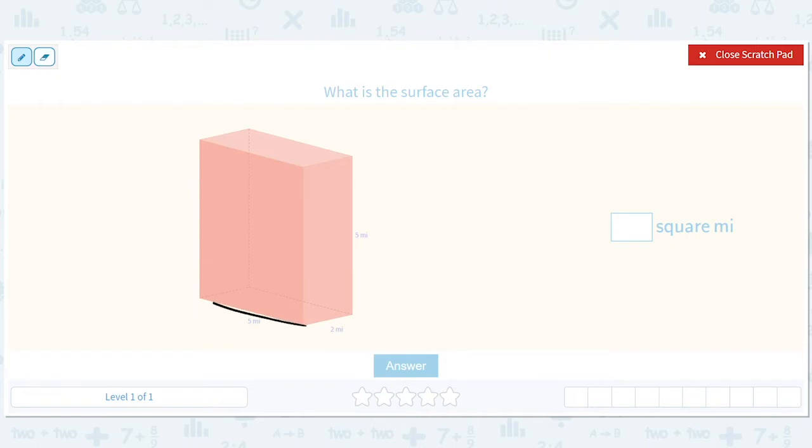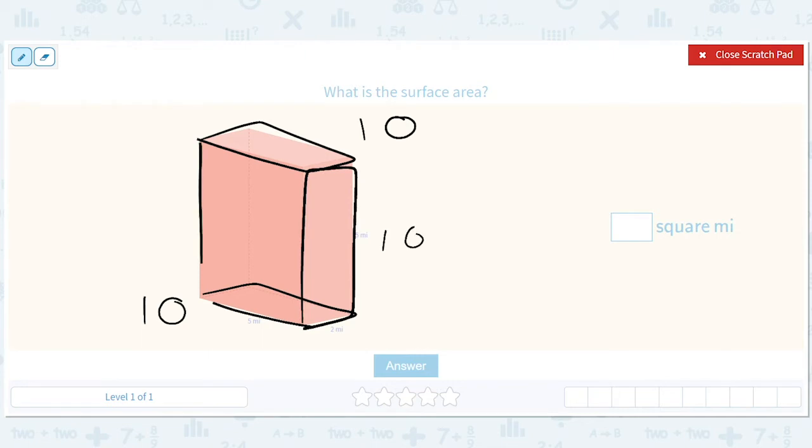Let me explain. If we have 5 times 2, that's this, right? So this area is 10, but then there's another 10. So that's another 10. And then this is 2 times 5, so this is 10, and then this thing over here is another 10.